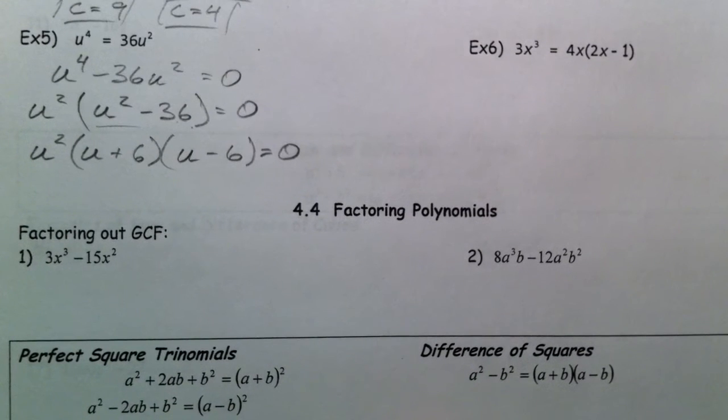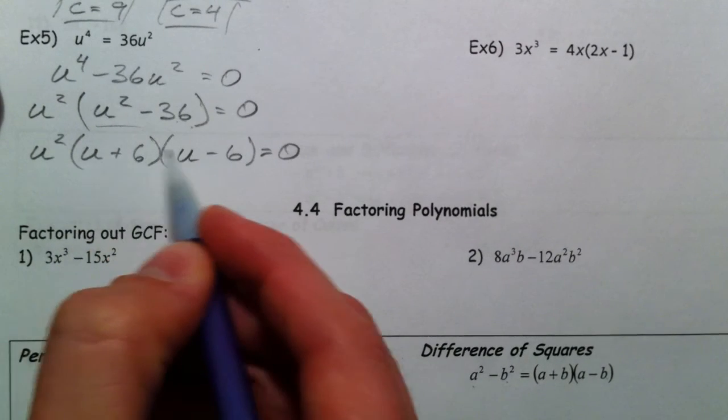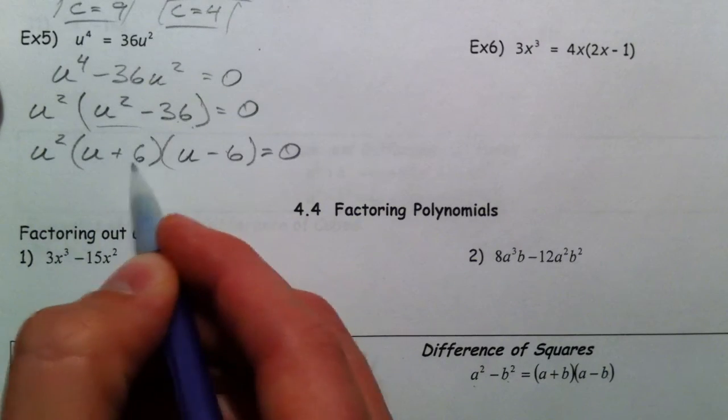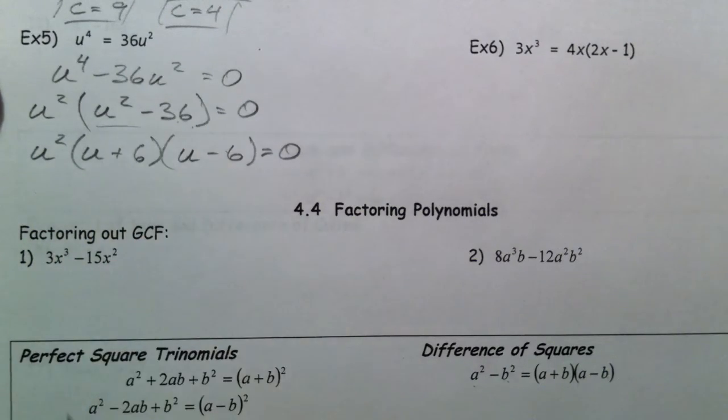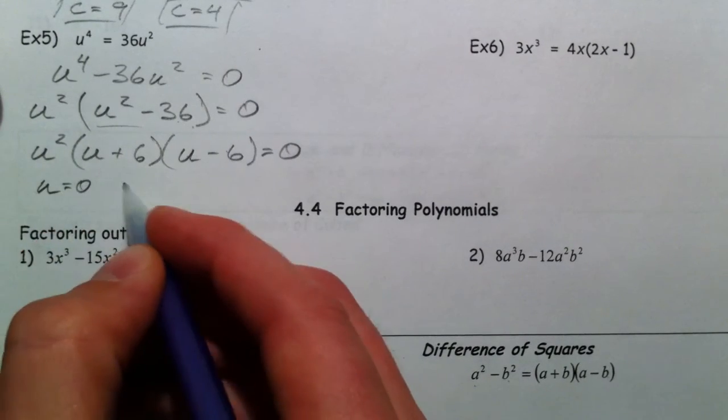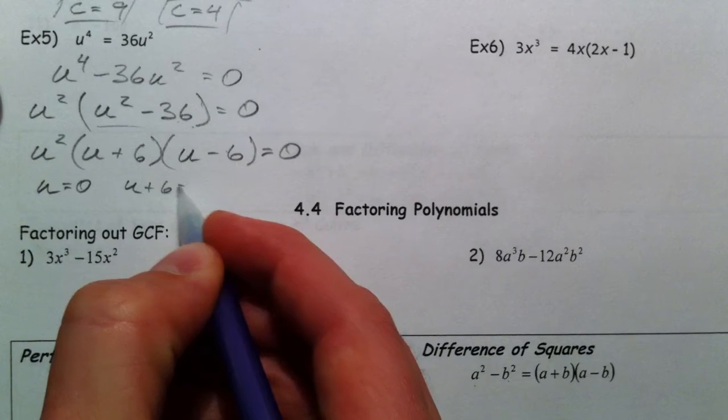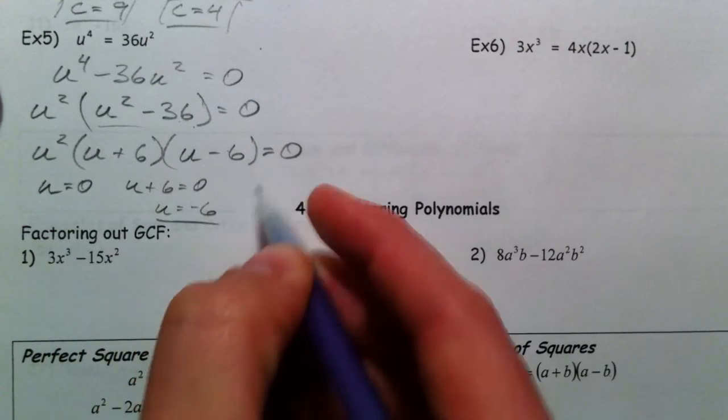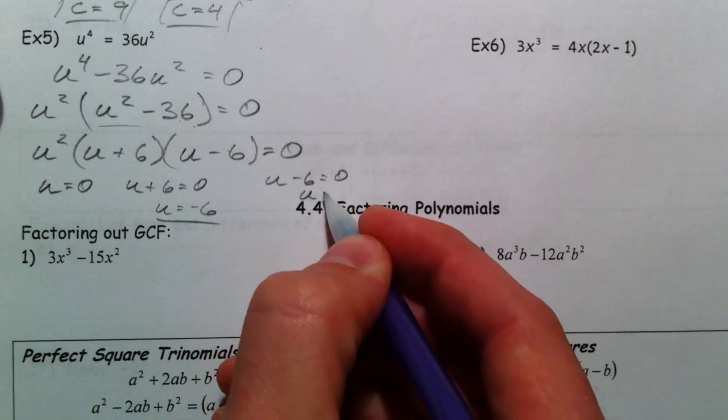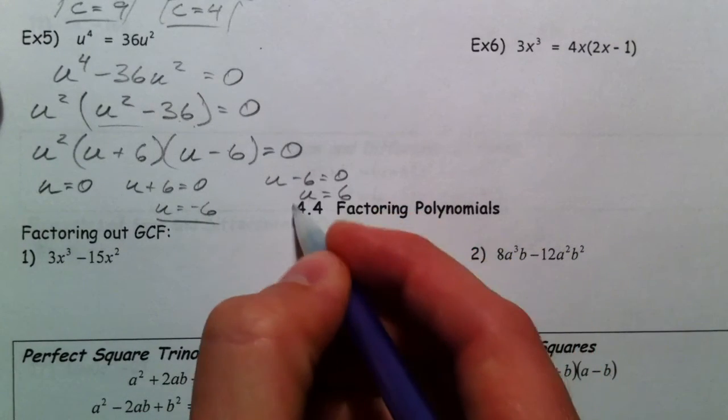Now, we technically haven't talked about this yet, but it's going to be down here. Something squared minus something squared is always the plus minus, because u squared and negative 6u, positive 6u, with the outside and inside, the inside is going to cancel out. So then, either u equals 0 from out front. u plus 6 equals 0, so u equals negative 6. Or u minus 6 equals 0, so u equals positive 6.